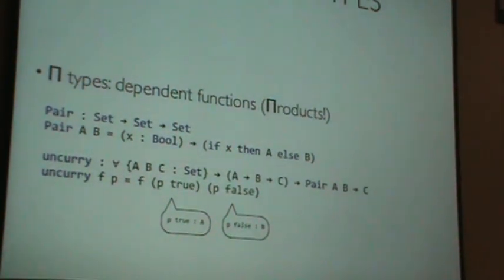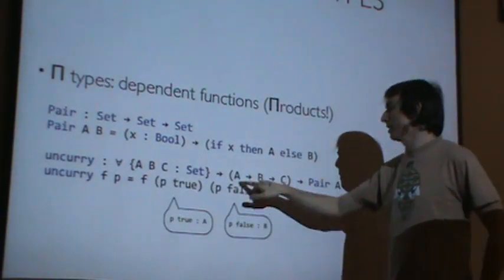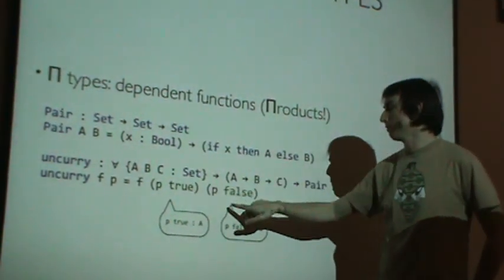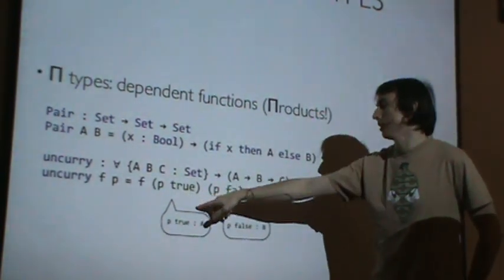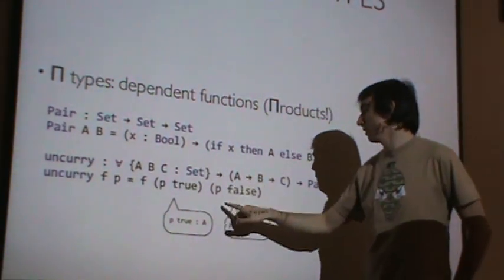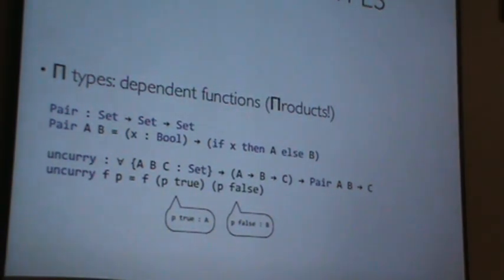We can write uncurry again, with our function f from a to b to c. We've noticed that simply by varying the passed in value, we can get a different return type out of this. So p of true is an a, and p of false is a b. And so, our uncurry works out just fine, too.